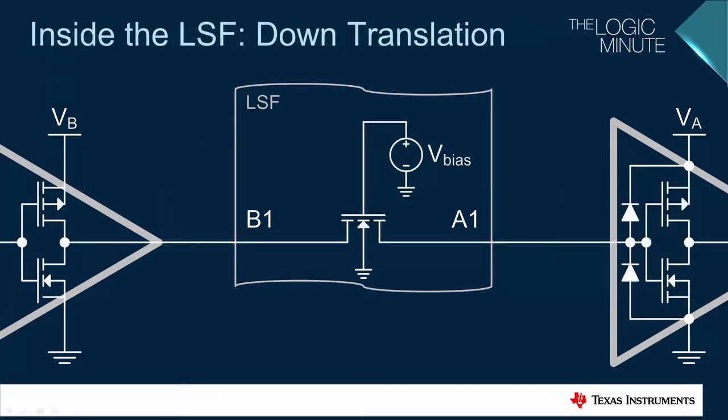This schematic provides a more accurate view of what is going on inside the transmitter, receiver, and the LSF. The transmitter is on the high side of the LSF and has a push-pull output, which will either be driving the B1 input of the LSF to VB or to ground. The receiver has a high impedance standard CMOS input.